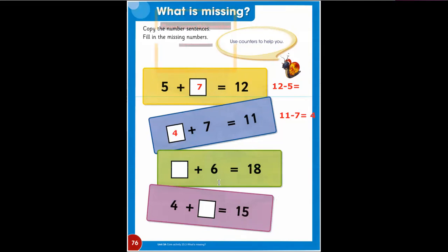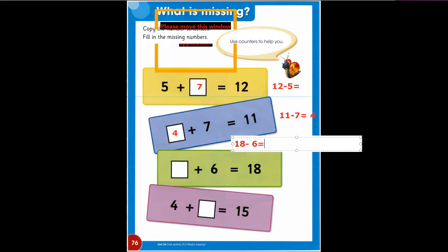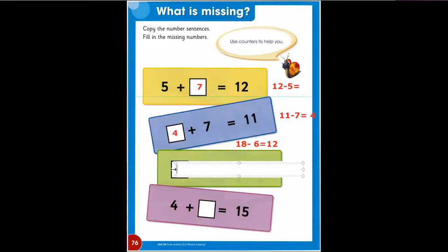Next question. Something plus six equals 18. So what we are going to do, we are going to reverse it: 18 minus six. So one will be as it is, we will write one and eight minus six equals two. So when we add 12 with six, our answer is going to be 18.